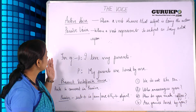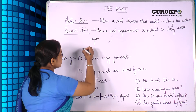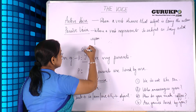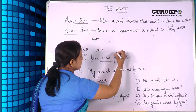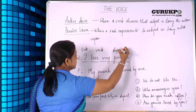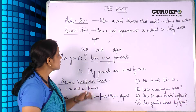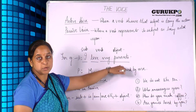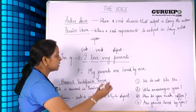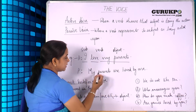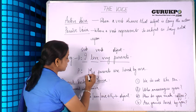Here we have the example: 'I love my parents.' Here, 'I' is the subject, 'love' is the verb, and 'my parents' is the object. Whenever we convert from active voice to passive voice, the object of the active voice becomes the subject of the passive voice. Here the object was 'my parents,' so in the passive voice, 'my parents' will become the subject.